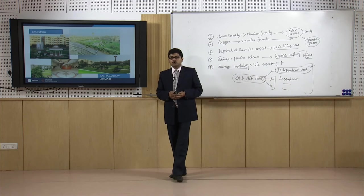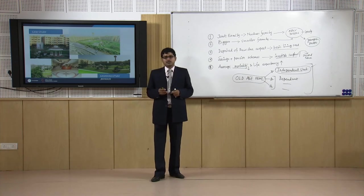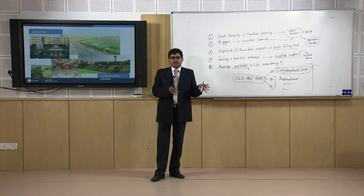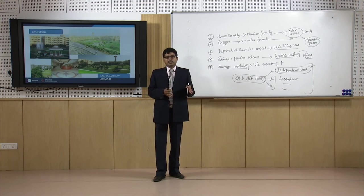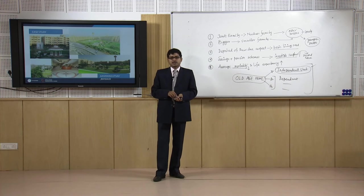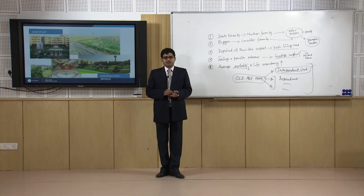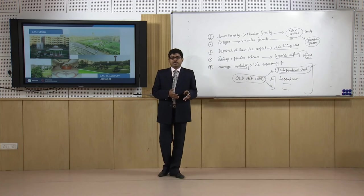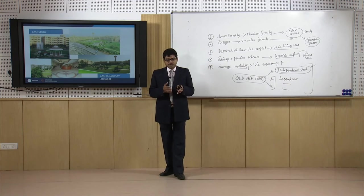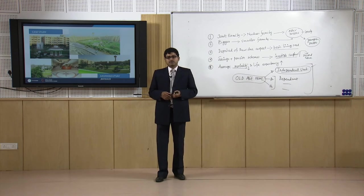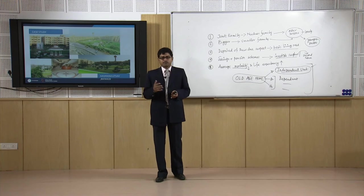We discussed that three categories of old age home are possible. One is the independent category, where senior citizens can stay independently without any assistance. There could also be a dependent unit, which needs some common facilities like kitchen, mess facility, some common health facility, and community services. And there could be assisted living, where dependency is much higher — in that category, along with the old age home, a separate room can be provided for the attendant and assistance, who help with day-to-day living, medical needs, and physical circulation from one place to another.